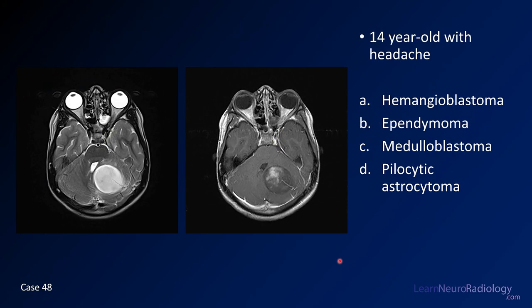Case number 48 is a 14-year-old with headache. We have images through the posterior fossa — a T2 and a post-contrast. Your choices are hemangioblastoma, ependymoma, medulloblastoma, or pilocytic astrocytoma.